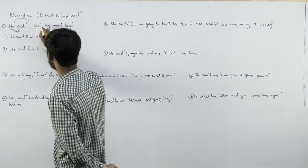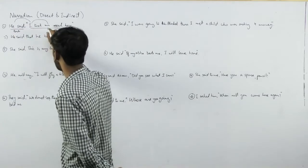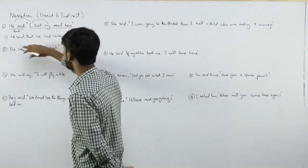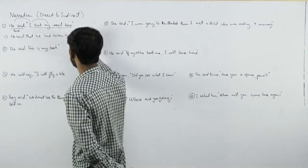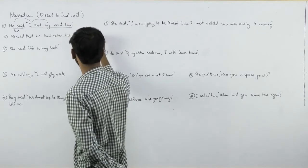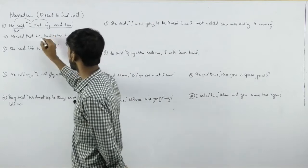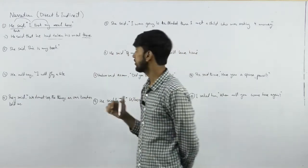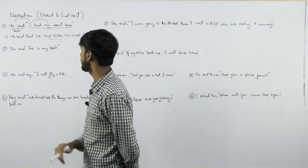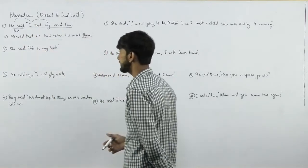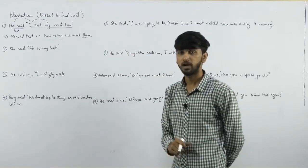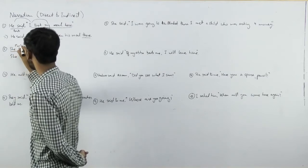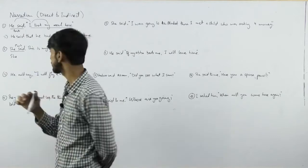When we talk about pronouns, 'I' changes to 'he.' So 'I' becomes 'he.' Also, 'here' changes to 'there,' and 'my' changes to 'his.' For example, 'this is my book' — we will change the pronoun, so 'my' changes to 'her.'